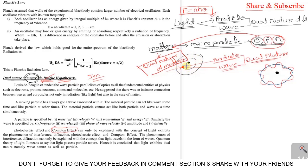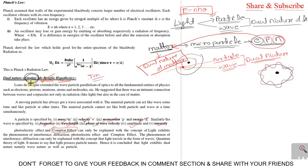De Broglie imagined by seeing experiments that light has both particle and wave nature — that's why we call it de Broglie's hypothesis. When we say particle nature of an electron, we can calculate mass, velocity, and momentum of the particle. When we say electron has a wave nature, we can calculate frequency, wavelength, phase velocity, amplitude, and intensity. Particle nature is associated with mass, velocity, momentum, and energy; wave nature is associated with frequency, wavelength, phase velocity, amplitude, and intensity.